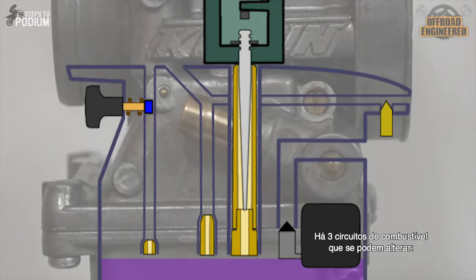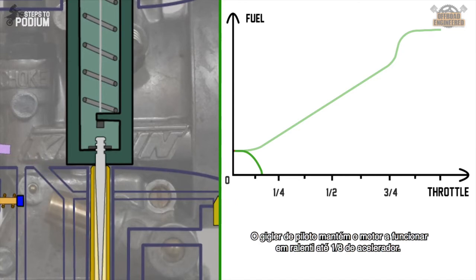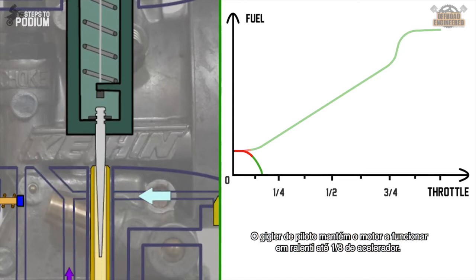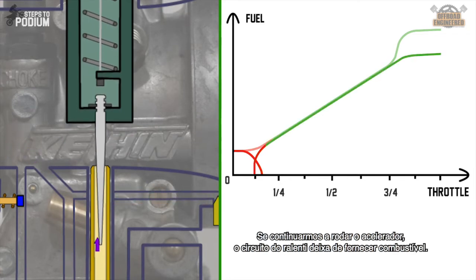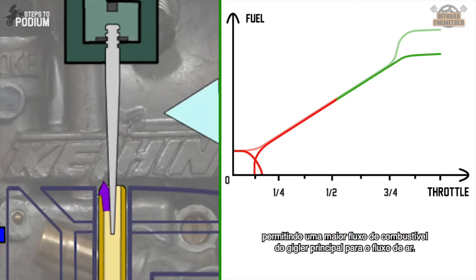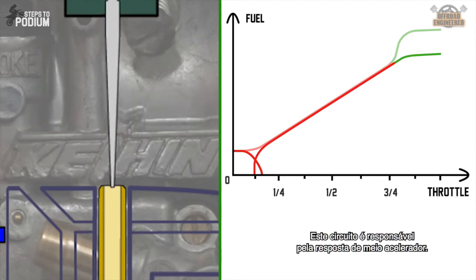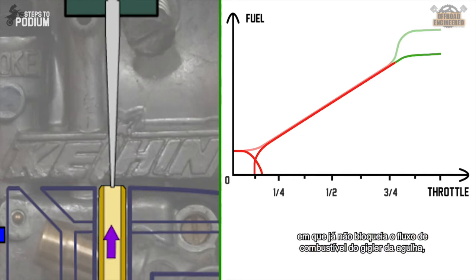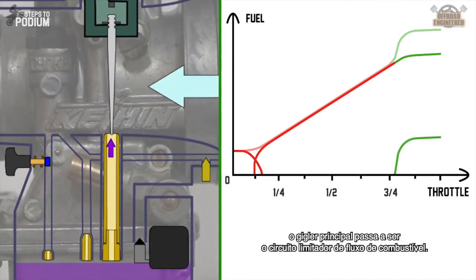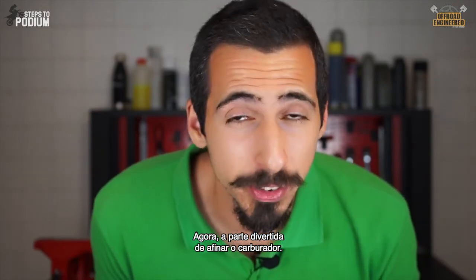There are three tunable jetting systems on a carb. The idle jet, the needle and needle jet, and the main jet. From a fully closed throttle position, the idle jet is what keeps the engine running up to around 1/8 of throttle. If we continue to open the throttle, the idle circuit starts fading out. While the slide lifts, the area between the needle and the jet needle increases, allowing more fuel to be sucked through the main jet to the main air passage. This circuit is responsible for the mid-throttle response. When the slide is high enough so that the needle is no longer blocking the needle jet, the main jet becomes the limiting system for fuel flow. This jet is responsible for the end of throttle response and full throttle.